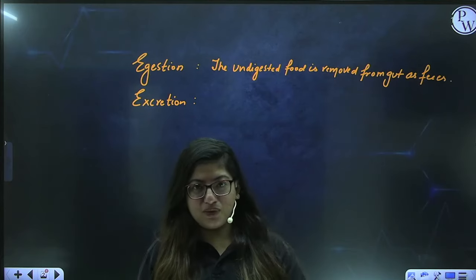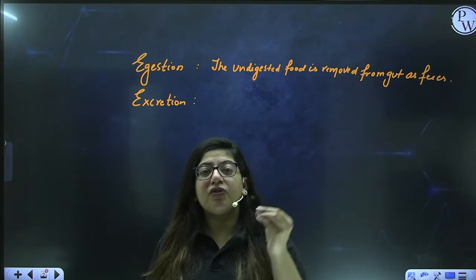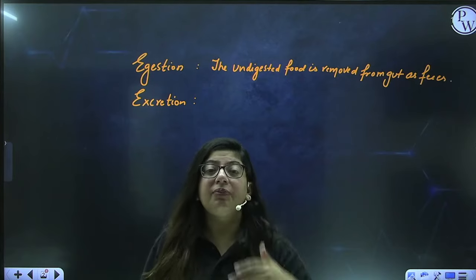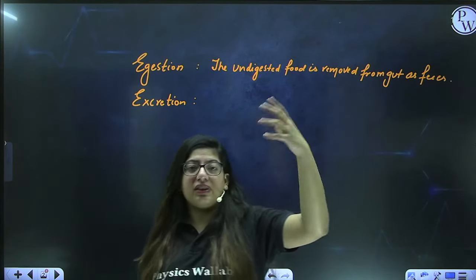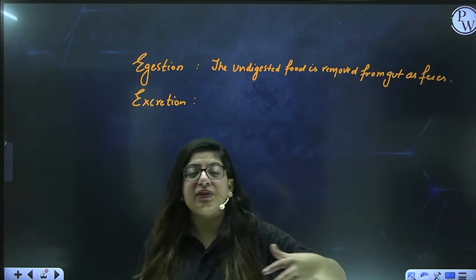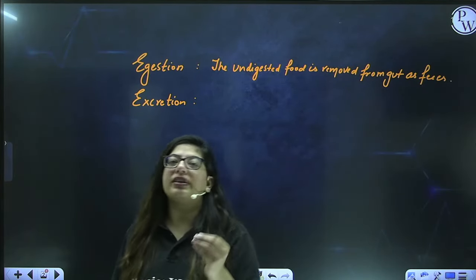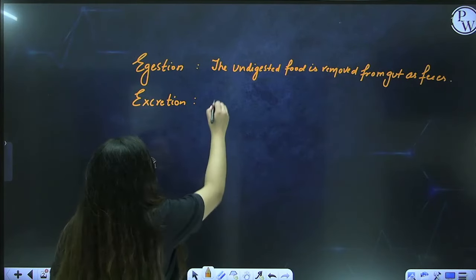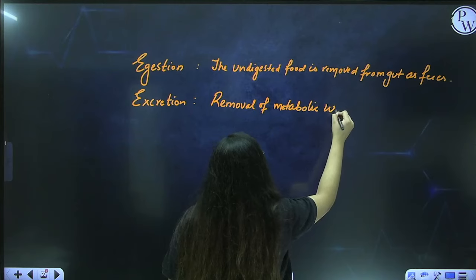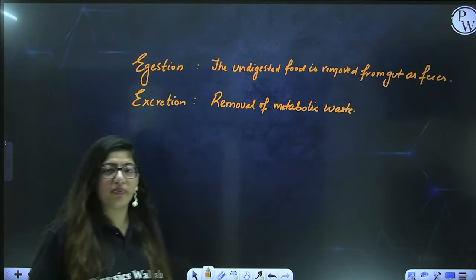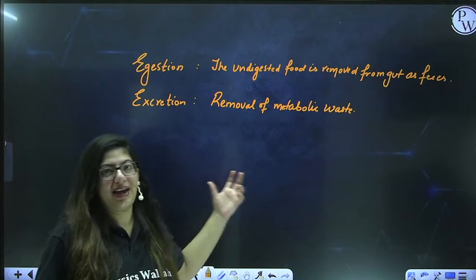In excretion, some food gets digested and some remains undigested. The undigested part is removed as feces, whereas the digested food is absorbed into your blood vessels, then goes to various tissues. In the tissues, when the food has been used, the cells produce certain excretory substances. The removal of those excretory substances, which are usually nitrogenous, is called excretion. So excretion is the removal of metabolic waste — like urea and uric acid.